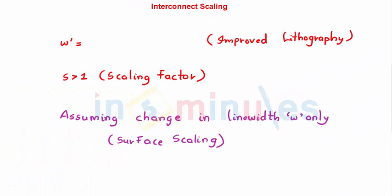Now if we use improved lithography process, lithography is nothing but photolithography process, it allows us to reduce the line width of the interconnect by a factor of S. So the width of the interconnect was W. Now W' after scaling, we said that the line width can be reduced by a factor of S where S is greater than 1. So I have reduced my line width.